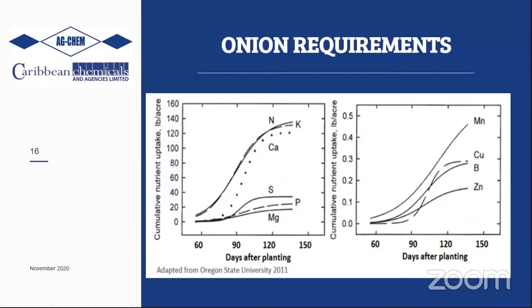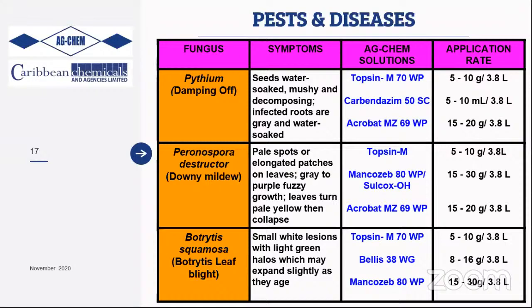Moving into pest and disease management, damping off is one of the most common fungal problems for nursery growers and can also affect onions. Caused by the fungus Pythium, seeds become water-soaked or mushy, or at the transplant stage the section in contact with the soil becomes narrow and wet. Agchem's control solutions include Topsin with active ingredient thiophanate-methyl, followed by carbendazim — a systemic fungicide applied as a foliar or drench application.